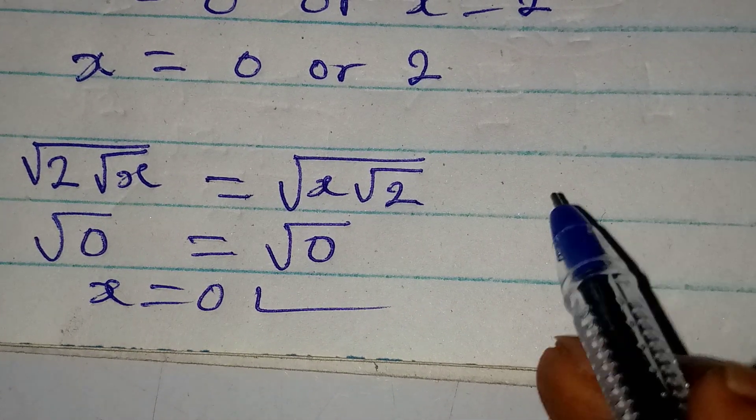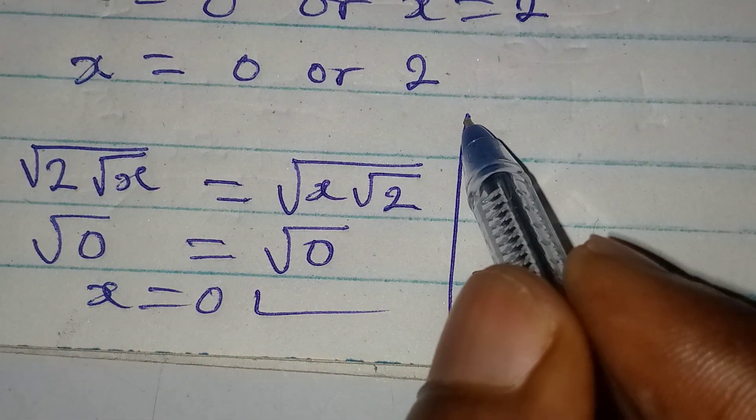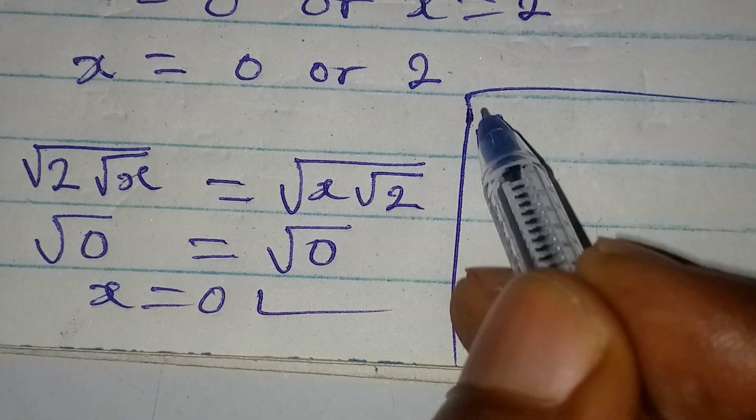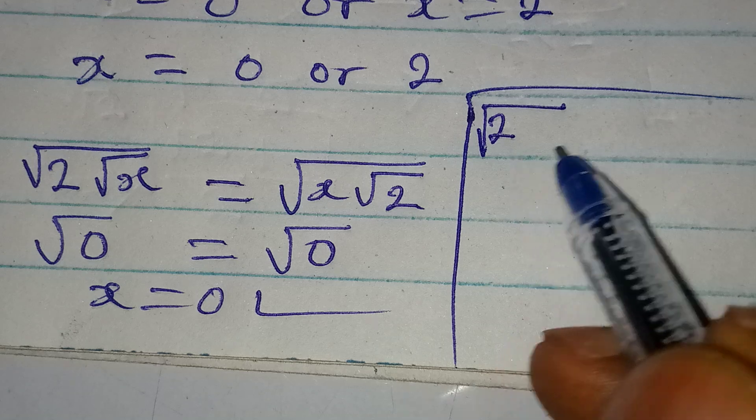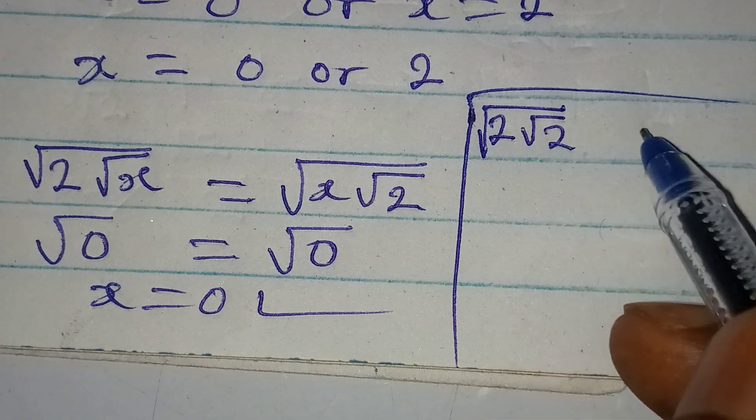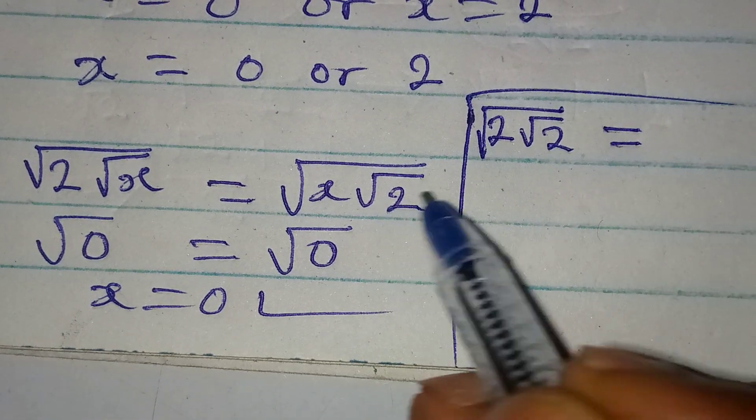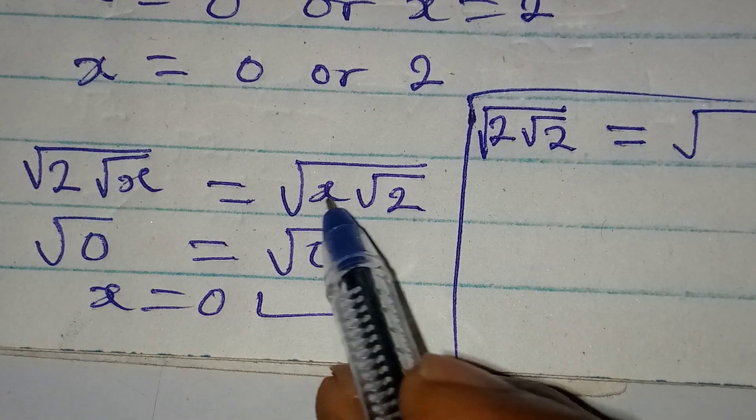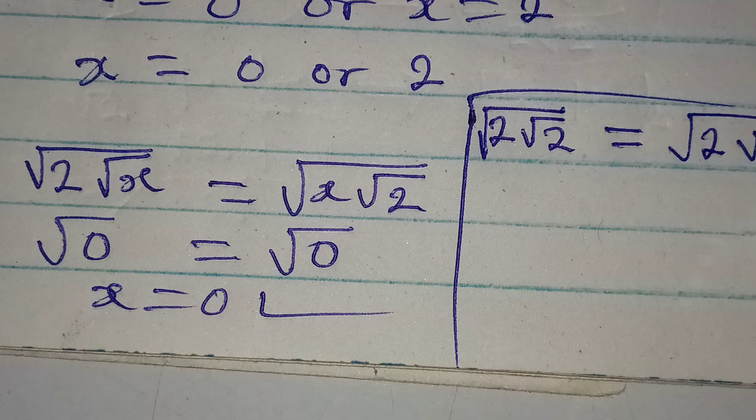And then let's try the other solution which is x equal to 2. That means we have 2, square root of 2, square root of 2. And then on the other side, we are going to have square root of... In here we have x which is 2 now, then square root of 2.